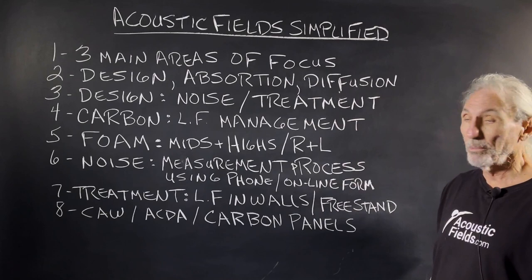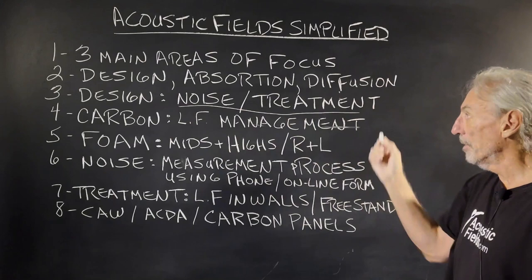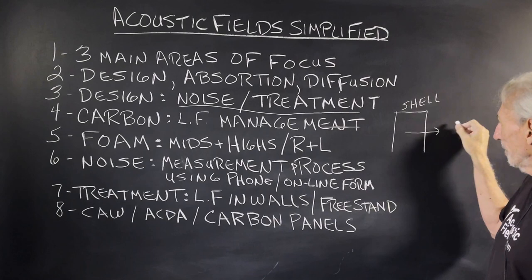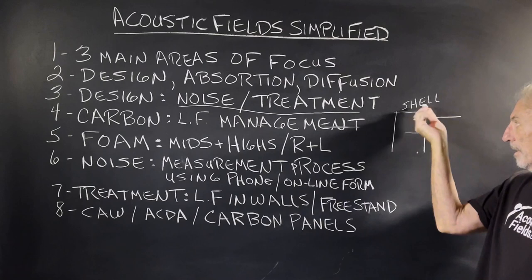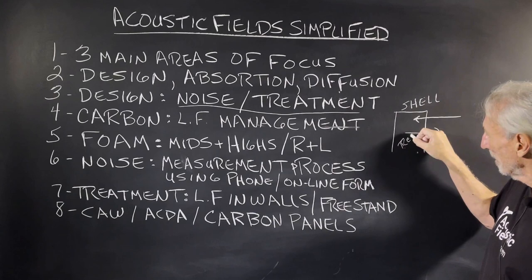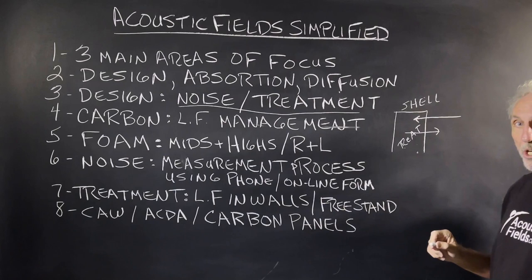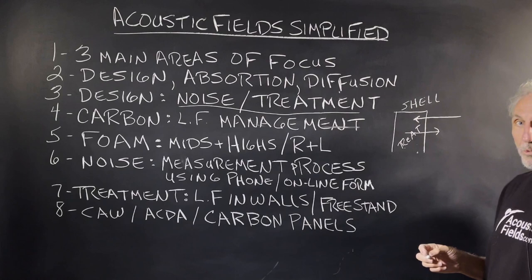The design breaks down into two parts: noise and treatment. We're building a room — this is called our shell — and we're generating energy that's leaving the room, and then we're getting energy from outside coming in. Think of a turtle: tortoise shell on the outside, and inside is where the turtle lives. We create the shell based on noise numbers, and then we do the treatment.